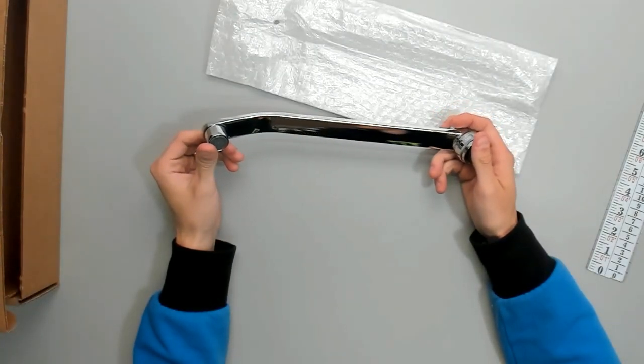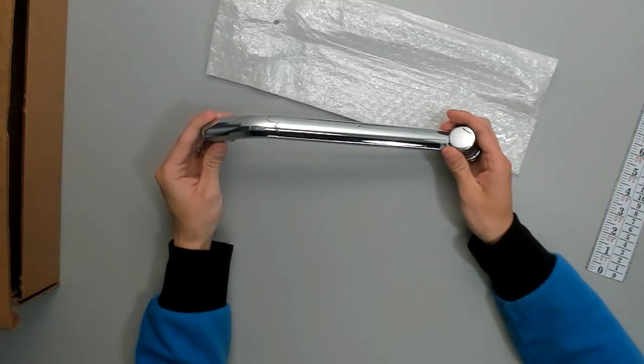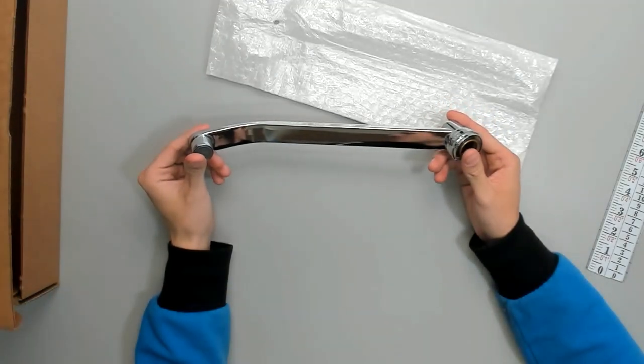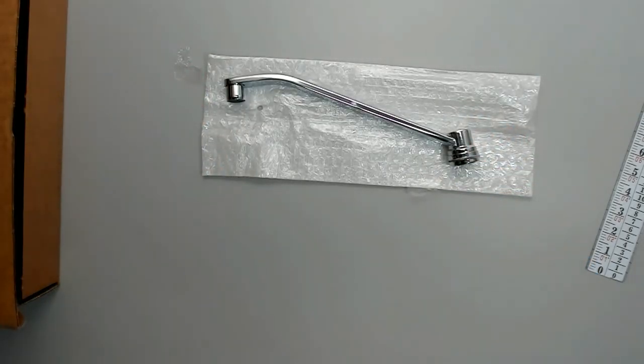And this is for the Gerber kitchen faucet, model 52-000. And once again, this is the genuine Gerber 98-271 spout. Thank you.